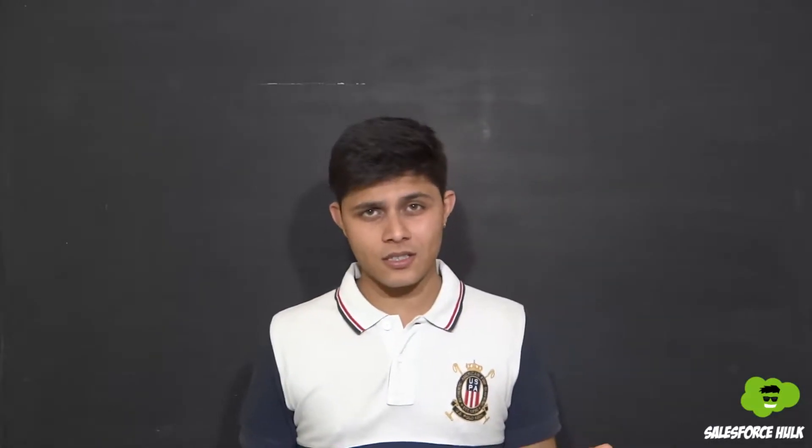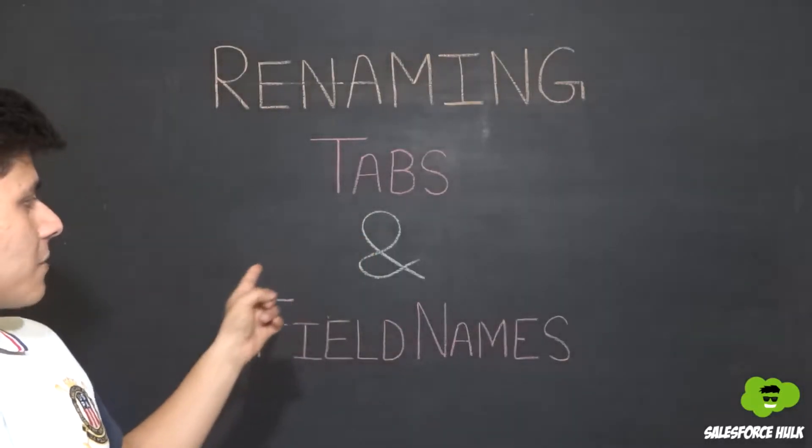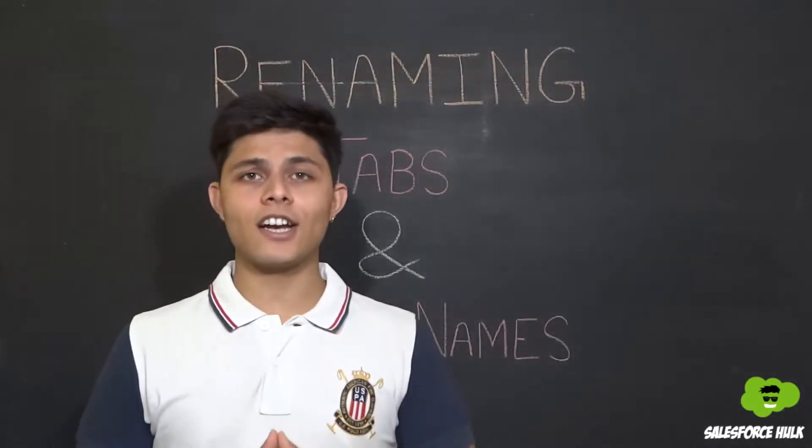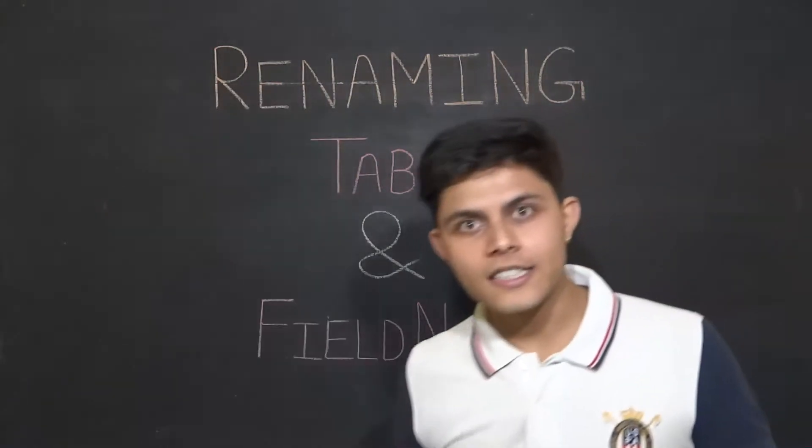But wasn't it difficult? Yes, it was. But what if you could reduce this effort for the users of your organization — helping them understand what accounts, opportunities, leads, and other standard objects are — by simply renaming tabs and field names of your standard objects? Let's see how.